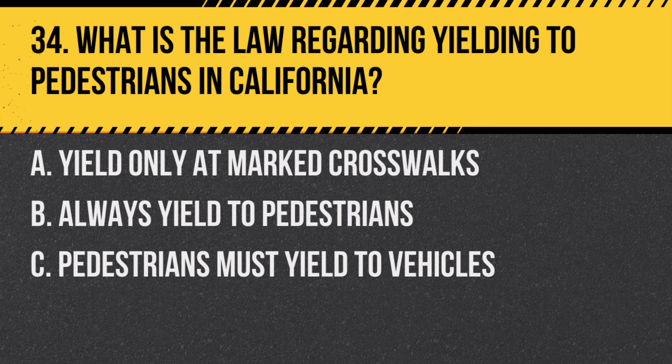Question 34: What is the law regarding yielding to pedestrians in California? A. Yield only at marked crosswalks. B. Always yield to pedestrians. C. Pedestrians must yield to vehicles.